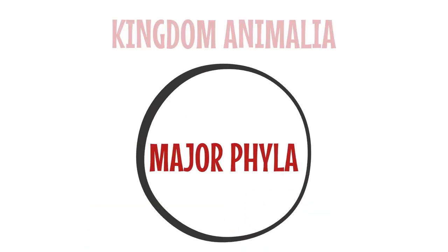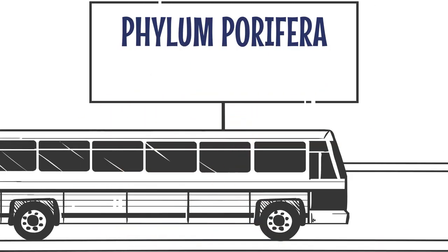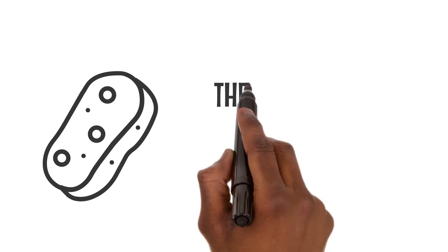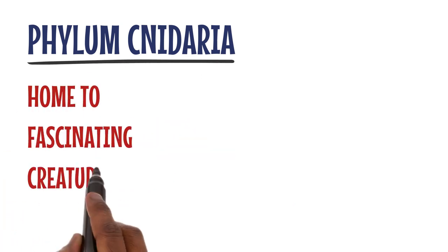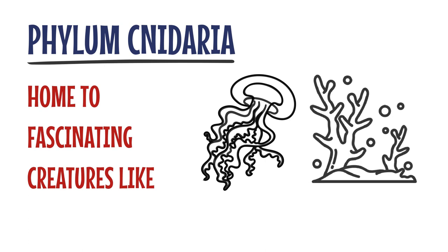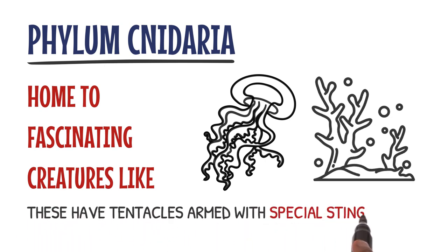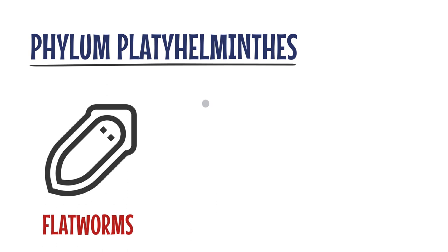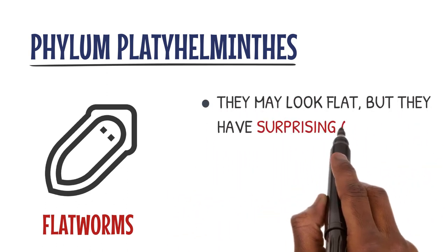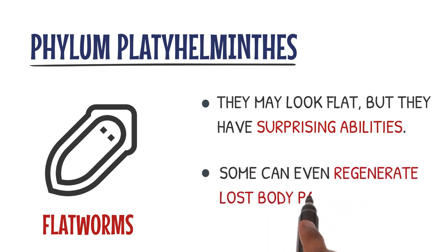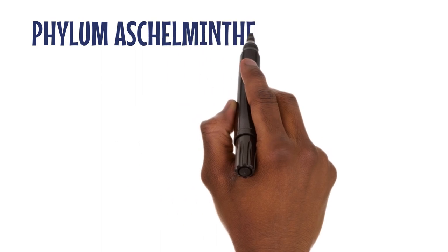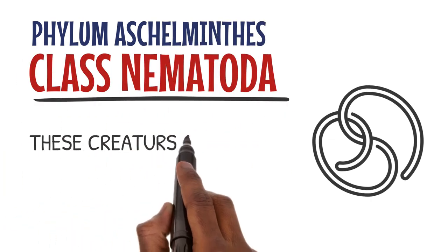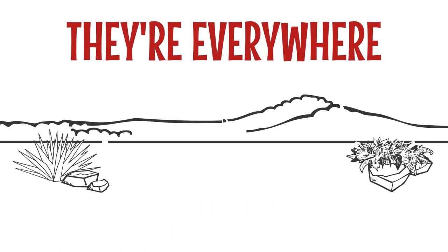Now, let's move on to the major phyla of Kingdom Animalia. Our first stop is Phylum Porifera, which includes sponges — the simplest multicellular animals. Next up is Phylum Cnidaria, home to fascinating creatures like hydroids, jellyfish, sea anemones, and corals. These animals have tentacles armed with special stinging cells. Moving on, we have Phylum Platyhelminthes, also known as Flatworms. They may look flat, but they have surprising abilities — some can even regenerate lost body parts. Let's also explore Phylum Aschelminthes, specifically class Nematoda. These creatures are commonly known as nematodes or roundworms, and they are everywhere — from soil to water, and even inside our bodies.